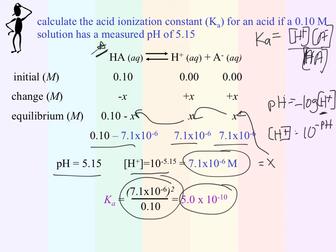So we've looked at how to calculate pH from our Ka value and initial concentration, and in this situation we looked at how to calculate our Ka from our pH value and initial concentration of our acid. These two processes are interchangeable and connected in very direct ways.